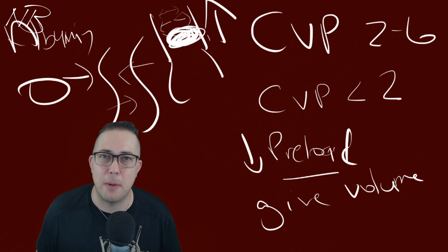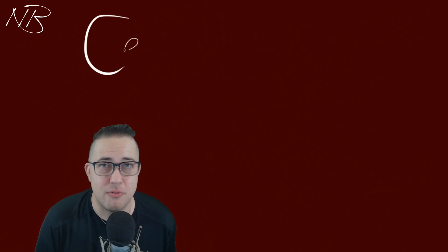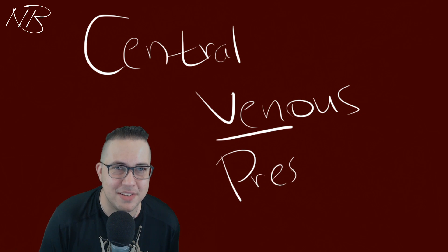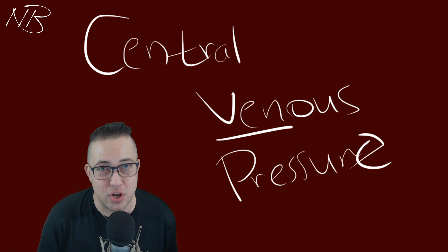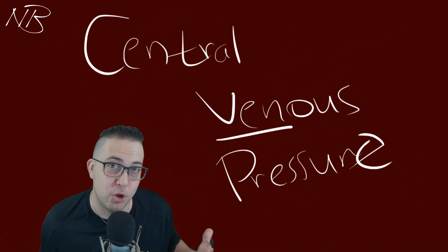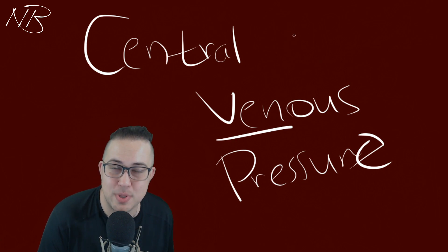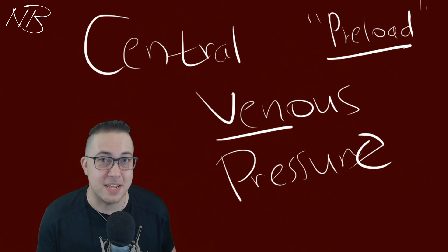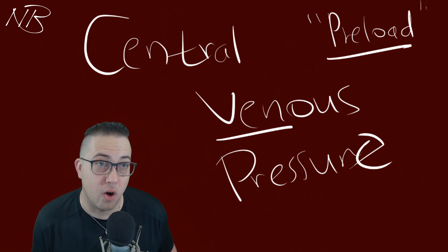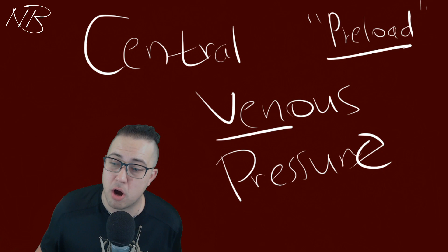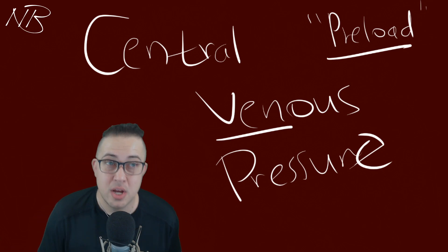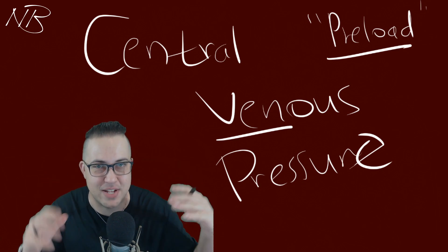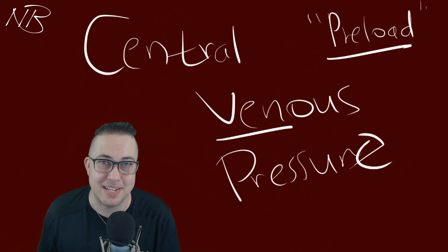That was central venous pressure in a nutshell. Remember, we're talking about that central vein — the superior and inferior vena cava — and it's a measurement of the pressure at the cavo-atrial junction, the pressure applied on that vein wall by fluid. It is a measurement of our fluid status and our preload. CVP normal range is 2 to 6. CVP greater than 6 means volume overloaded — we need to diurese that extra volume off. CVP less than 2 means volume status is too low — we need to give volume and expand those vessels.